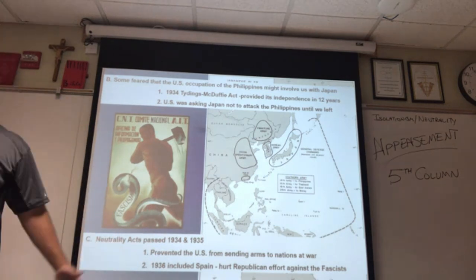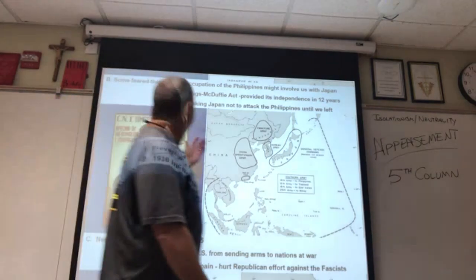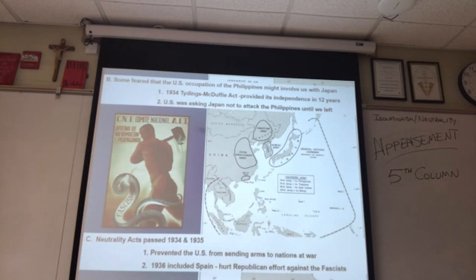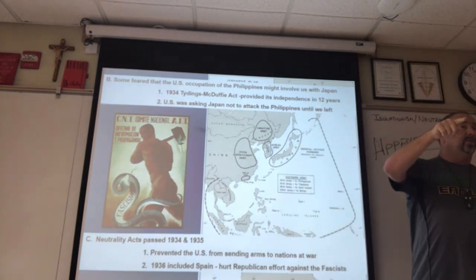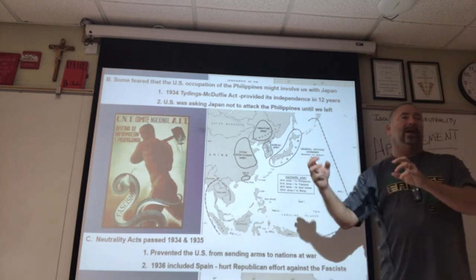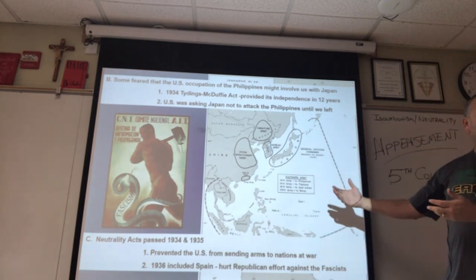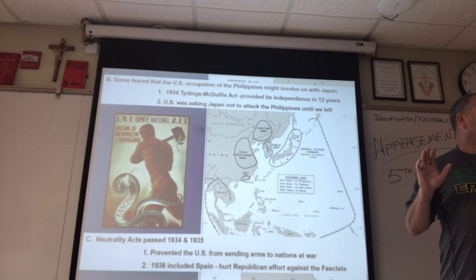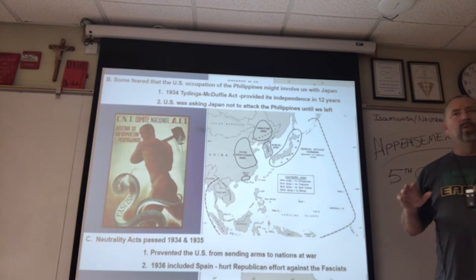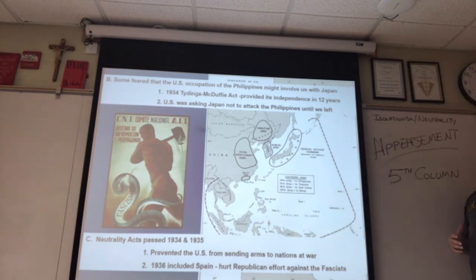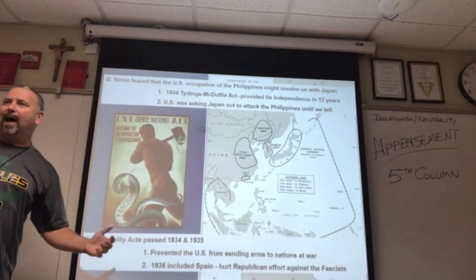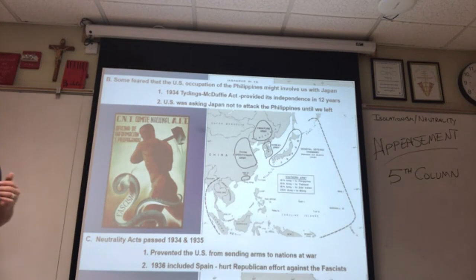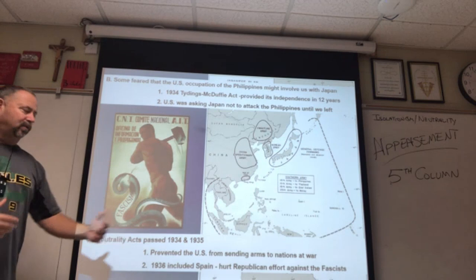So Congress in 1934 passes the Tydings-McDuffie Act, telling the Philippines — and the world, including the Japanese — that we are going to be leaving the Philippines in 12 years, in 1946, which we do. But the message to the Japanese is: we're not ready for war, which could be construed as a form of appeasement. Neutrality acts are meant to keep us out of war and keep us from taking sides, and they'll evolve throughout the 1930s.